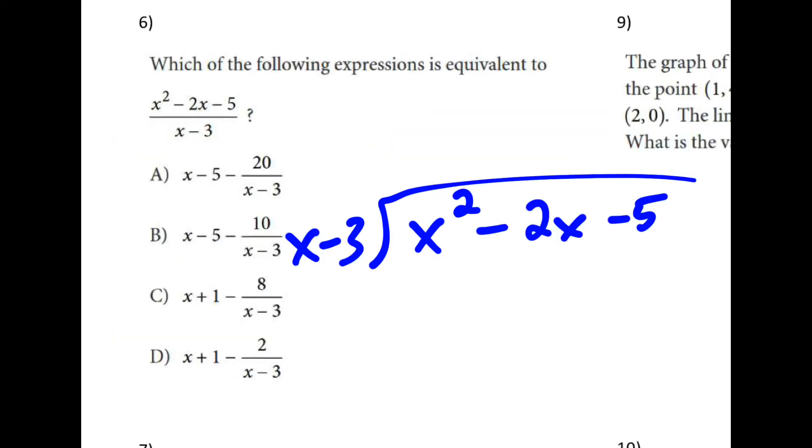So setting things up the same way, we might ask ourselves, how many times does x minus 3 go into this? Well, let's look at our lead coefficients. How many times does x go into x squared? x times. And if we take x minus 3 times x, we get x squared minus 3x.